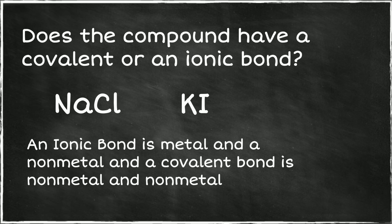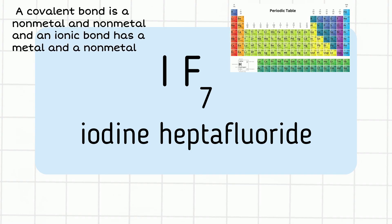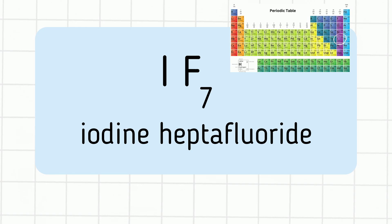We have this first one. The name is iodine heptafluoride. Remember with a covalent bond, you have two nonmetals. And with an ionic bond, you have a metal and a nonmetal. You have iodine, which is found in group 17, and it is a reactive nonmetal. And then fluorine is also found in group 17, and it's a reactive nonmetal. So you have nonmetal and nonmetal. So it is a covalent bond.